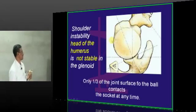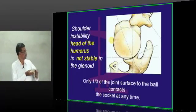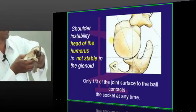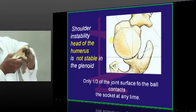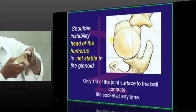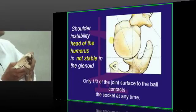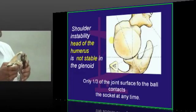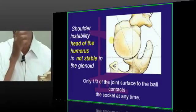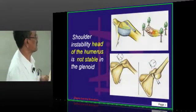From the superior aspect, the joint looks like this — only one third of the joint surface of the ball contacts the socket at any time. Hence, the shoulder is inherently unstable in the glenoid cavity; it is not stable because of its anatomical structure.